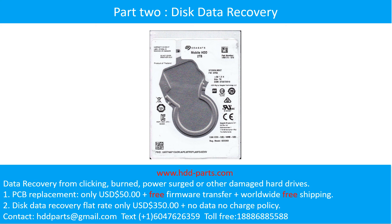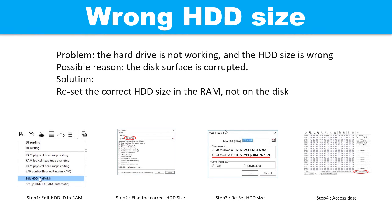Part 2: Disk Data Recovery. Wrong hard drive size problem. The hard drive is not working and the hard drive size is wrong. Possible reason: the disk surface is corrupted. Solution: reset the correct hard drive size in the RAM, not on the disks. Step 1: edit the hard drive ID in the RAM. Step 2: find the correct hard drive size. Step 3: reset the hard drive size. Step 4: access the user data.